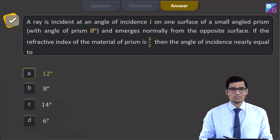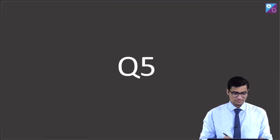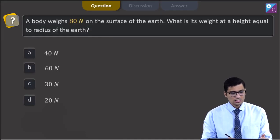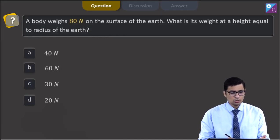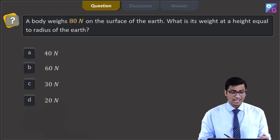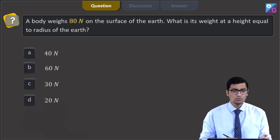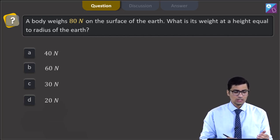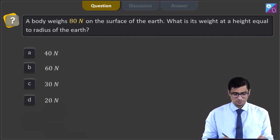This is question 5. A body weighs 80 newton on the surface of the earth. What is its weight at a height equal to the radius of the earth? The four options are 40 newton, 60 newton, 30 newton, and 20 newton.